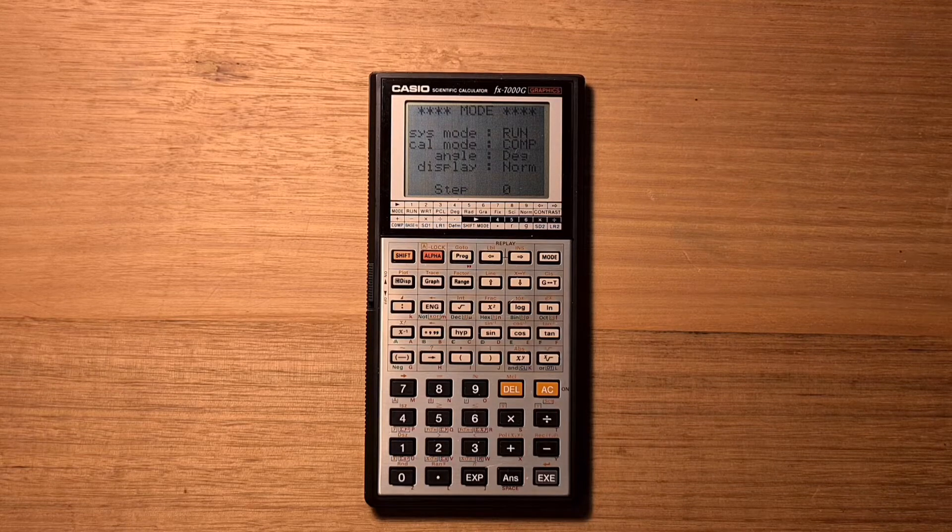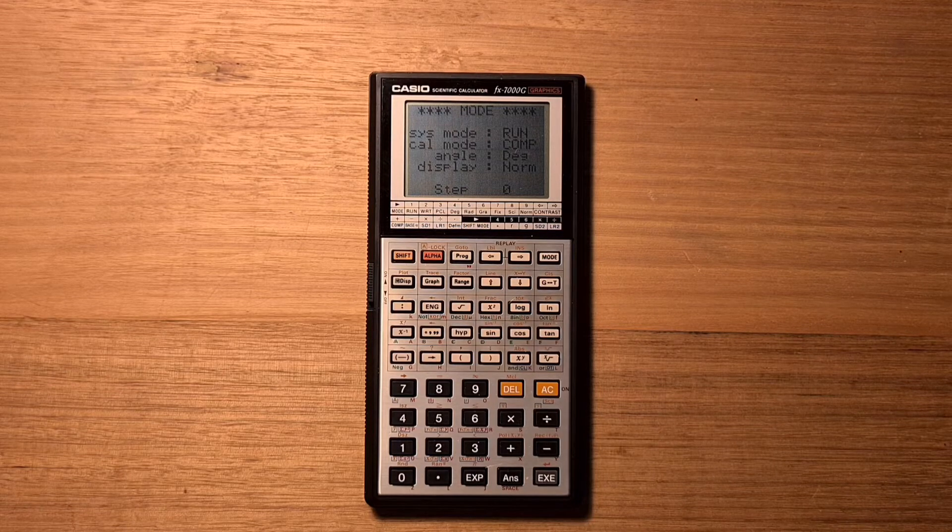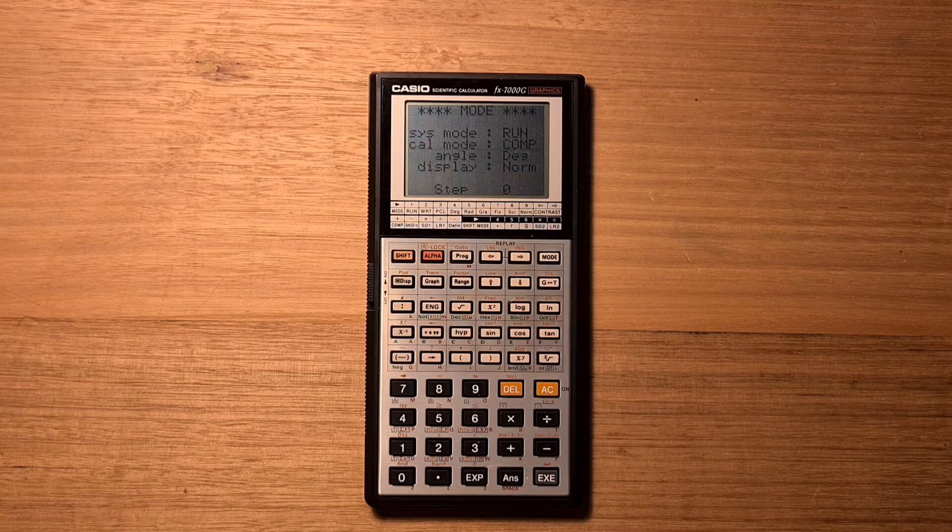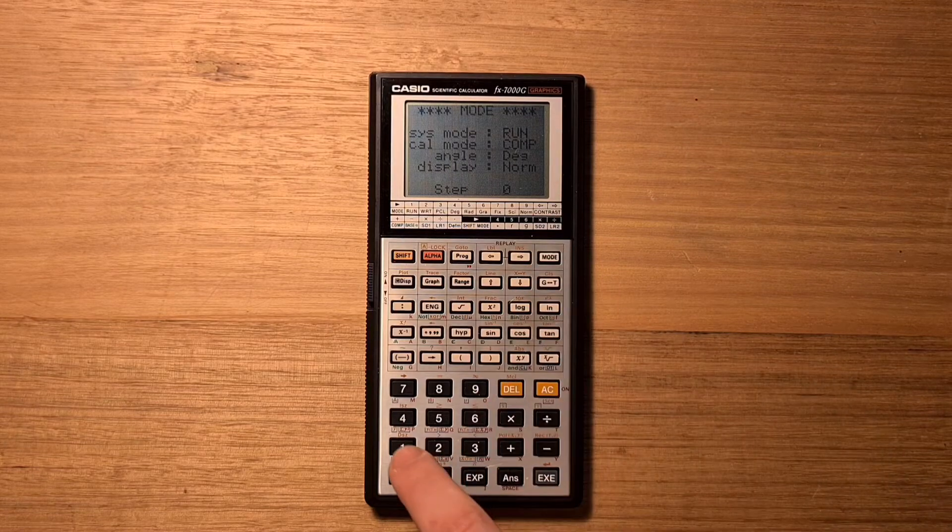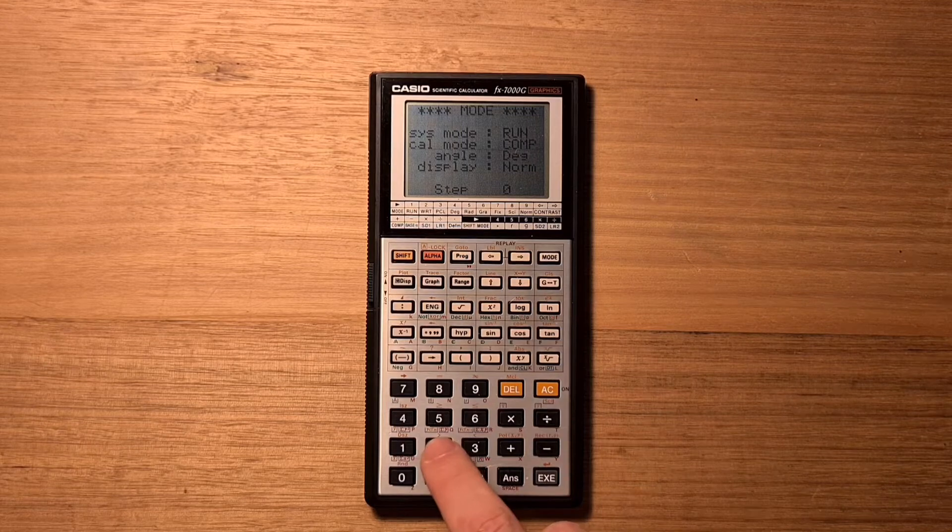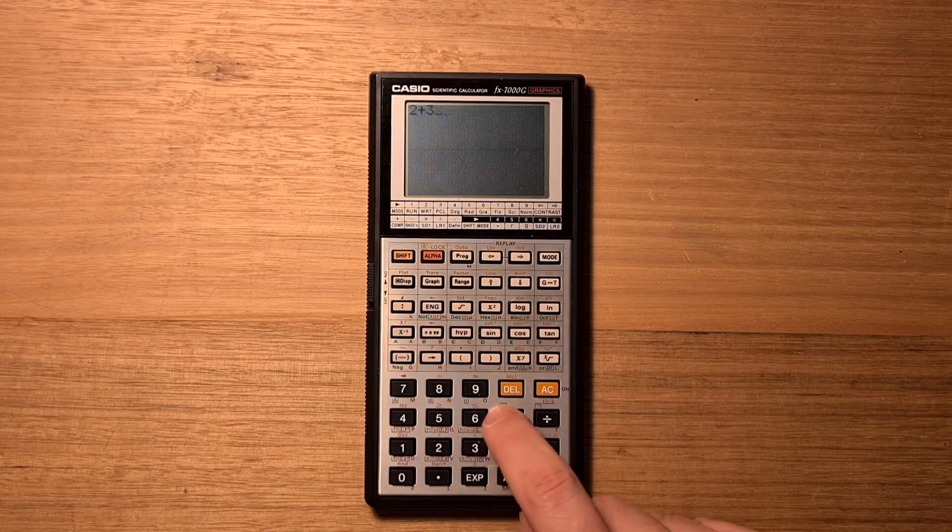So like many Casio calculators, the 7000G has a number of different modes. We'll start in run mode. So I hit mode 1 and we can key in a formula like 2 plus 3 times 4.